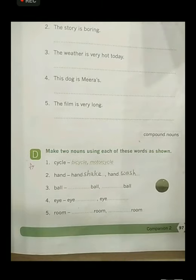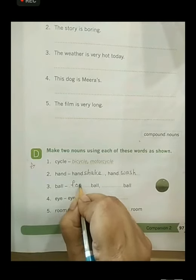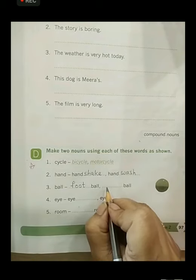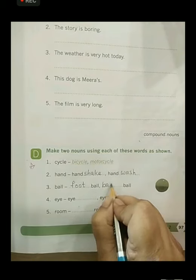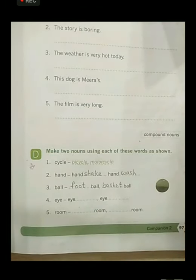What is the third one? Ball. What can we write? Football. F-O-O-T-B-A-L-L. And basketball. B-A-S-K-E-T-B-A-L-L. Now, both of them are outdoor games. Football and basketball.